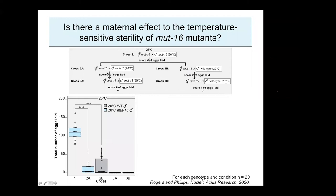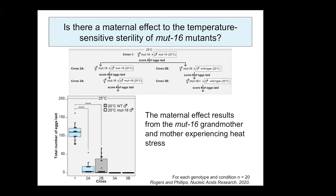Furthermore, when we mated F2 homozygous MUT-16 hermaphrodites to MUT-16 males raised at permissive temperature (Cross 3A), and when we mated heterozygous MUT-16 F2 hermaphrodites to wild-type males at permissive temperature (Cross 3B), neither F2 hermaphrodite genotype laid any eggs after mating. The sterility of Cross 3B is especially revealing because it indicates that the sterility of heterozygous MUT-16 hermaphrodites is a maternal effect resulting from their homozygous MUT-16 mutant mothers and grandmothers being raised at restrictive temperatures.